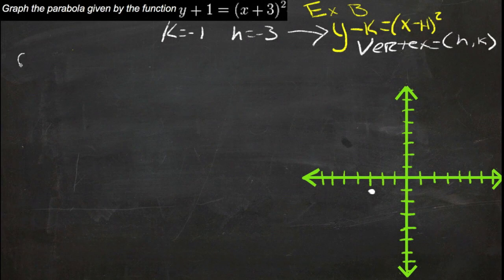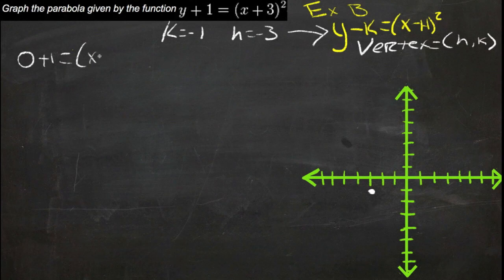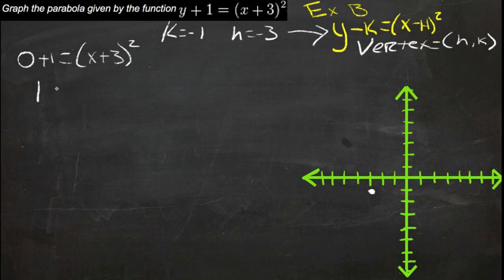So we set y to be 0, that means we get 0 plus 1 equals x plus 3 squared. 0 plus 1 is 1, equals x plus 3 squared.